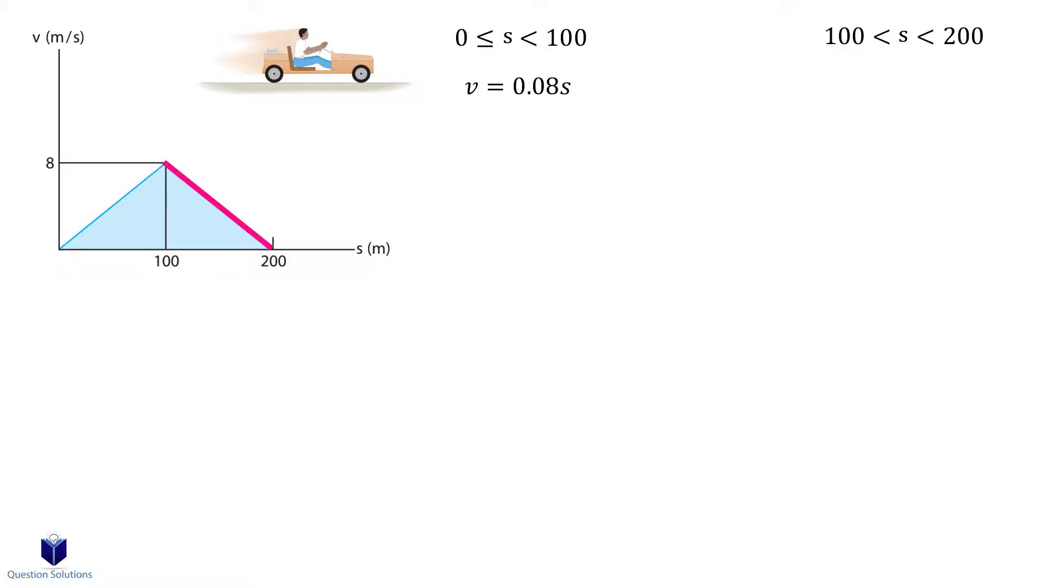The second segment is the negative of the same equation and its y-intercept. So it's v equals negative 0.08s plus 16. To determine the acceleration,